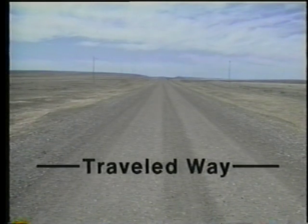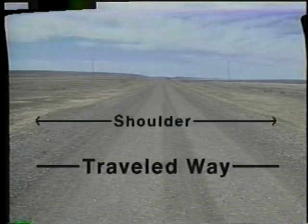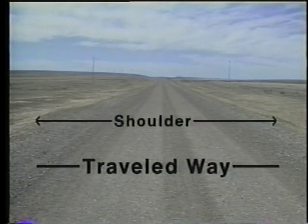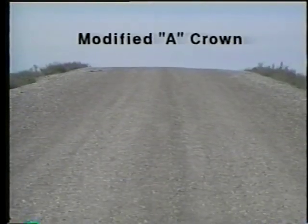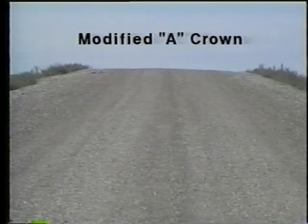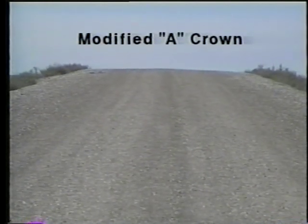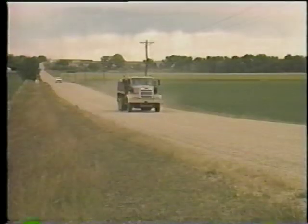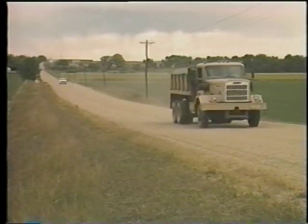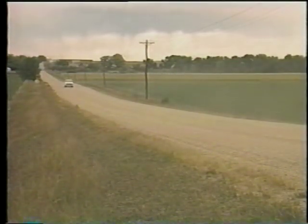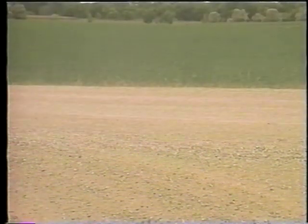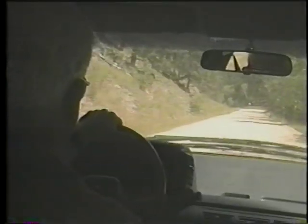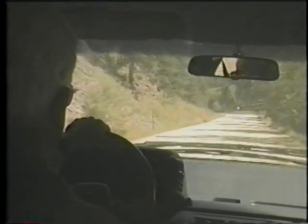They should have a traveled way, a shoulder on each side, and roadside ditches. Their surface should have a modified crown with the travel lanes sloping down from the center of the road for drainage. The surface layer must be strong enough to prevent overstressing the subgrade, stable enough to resist raveling, shoving, rutting, and consolidation within the layer, and smooth and skid-resistant enough for a comfortable, safe ride.